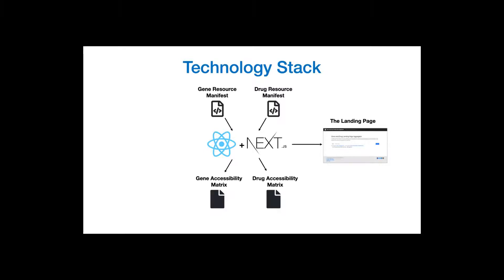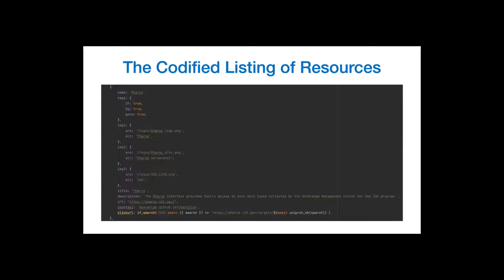The most common approach for aggregating data is to aggregate it into a unified database for querying, but this quickly becomes unsustainable as data types of different granularity are integrated. Our approach is different — we do not store and serve the information, but instead query resources on demand and use each resource to serve the information they were designed to serve in a meaningful fashion, starting with primary sources.